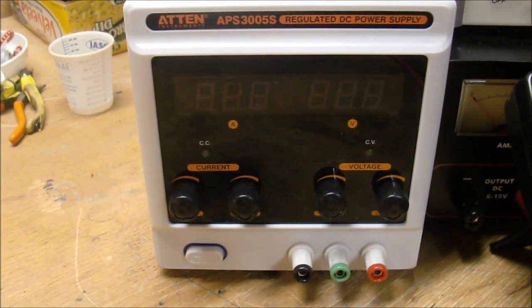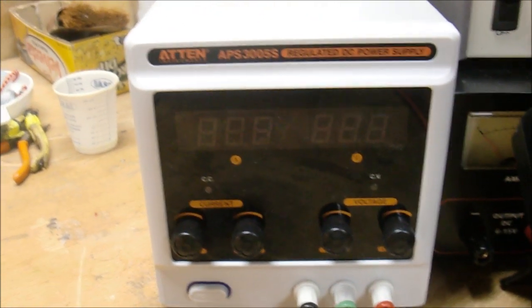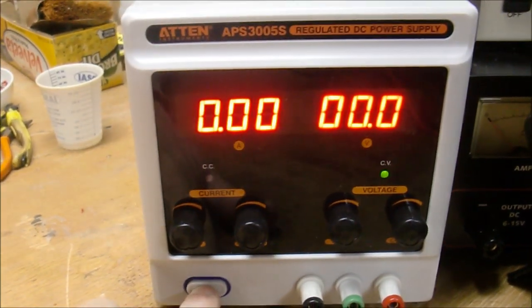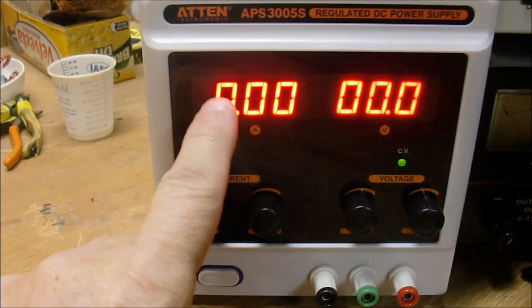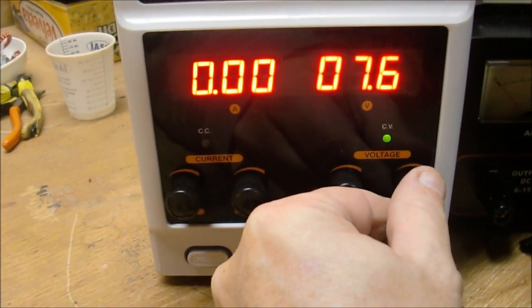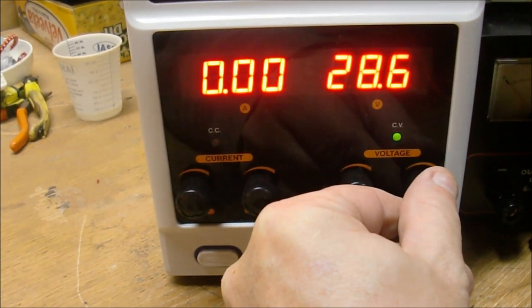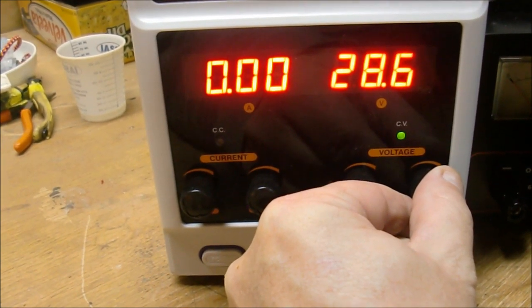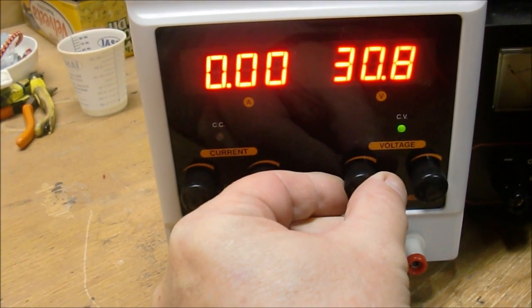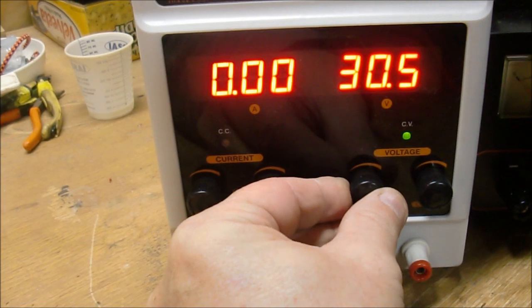So here we are on the bench. We've got the ATEN APS 3005S regulated DC power supply. I'll turn it on here. You've got amps on the left, volts on the right. I'll crank the coarse volts up, see how high we go. Should go over 30 volts. About 28.6 here. Do the fine tuning, gets it over 30. Okay, that's cool. Go all the way up on the fine tuning, over 31. Put that about halfway.